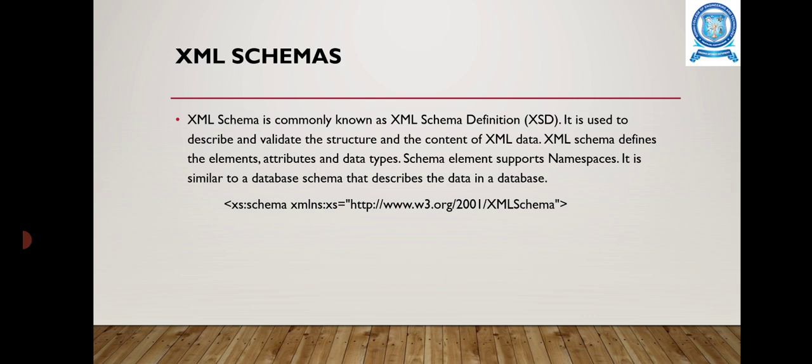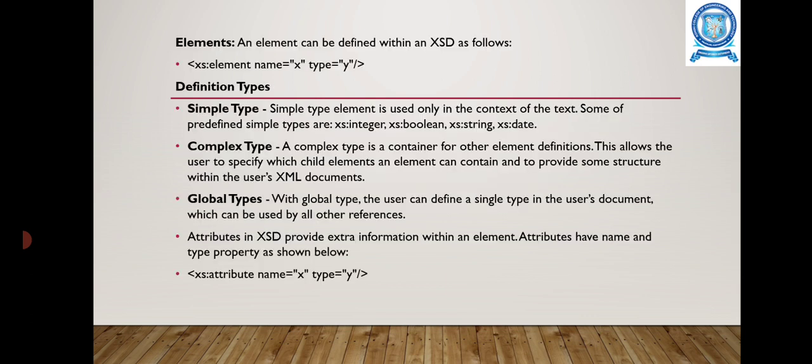The format to specify a schema uses xs:schema with the XML namespace. Elements used in the XML schema are specified as xs:element with name and type attributes. There are three definition types: simple type, complex type, and global type. Simple type elements are used only in the context of text content; some predefined simple types are integer, boolean, and string.